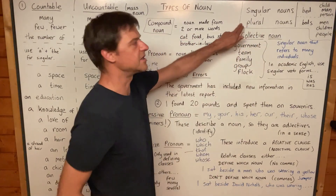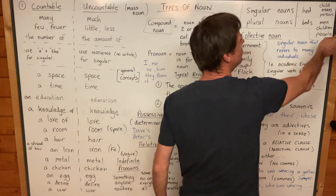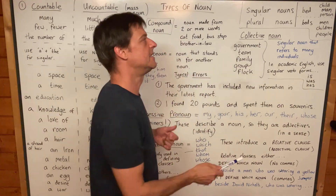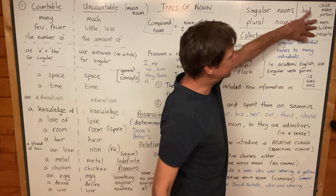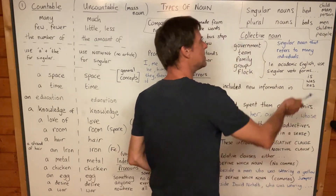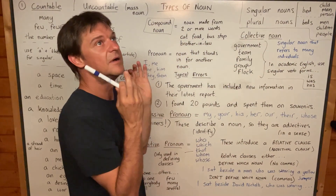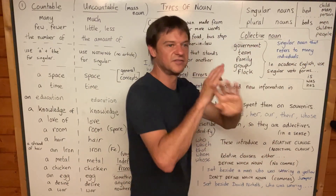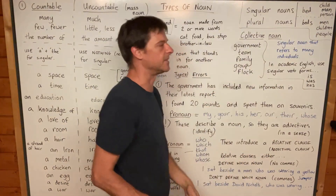This is another term I'm going to use a lot on this course: singular nouns, which means one — like 'bed,' 'child,' 'man,' 'person' — and plural nouns, which means many — like 'beds,' 'men,' 'children,' 'people.' Do notice that we have a number of irregular plurals. Some nouns become plural in an irregular way. We don't just add an S and say 'mans,' 'childs,' 'persons' — those are incorrect. We say 'men,' 'children,' 'people.'